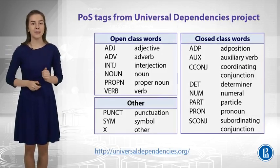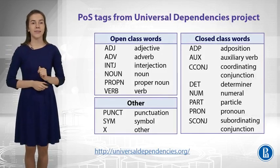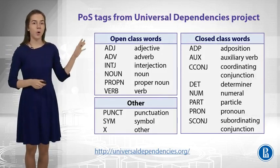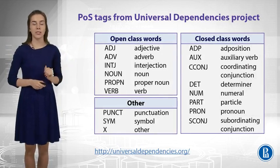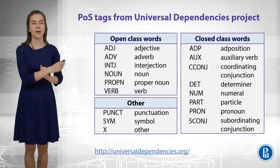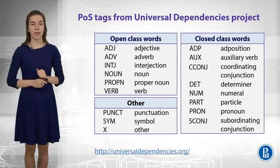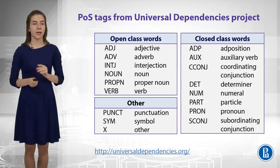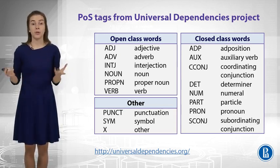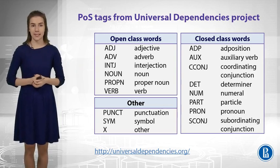One system shows open class words and closed class words and some other labels. For example, there are also symbols for punctuation if we see it in the text.